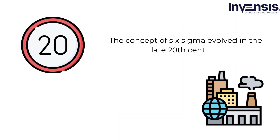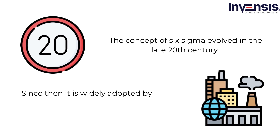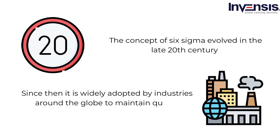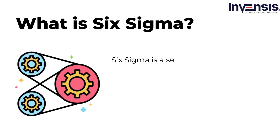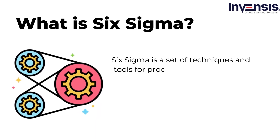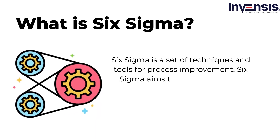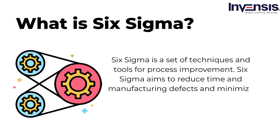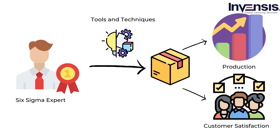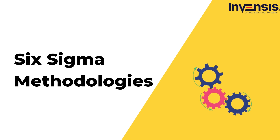What is Six Sigma? The concept of Six Sigma evolved in the late 20th century, and since then it has been widely adopted by industries around the globe to maintain quality. Six Sigma is a set of techniques and tools for process improvement. It aims to reduce time and manufacturing defects and minimize dispersion in manufacturing and business processes. Six Sigma experts follow specific value targets to reduce defects and increase customer satisfaction.